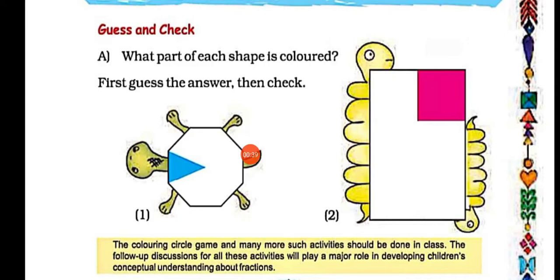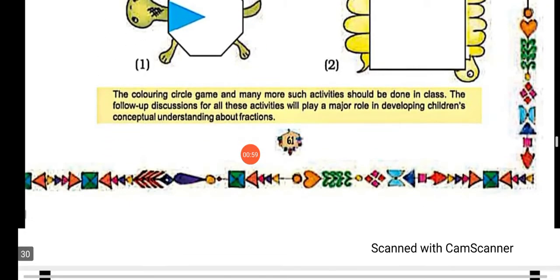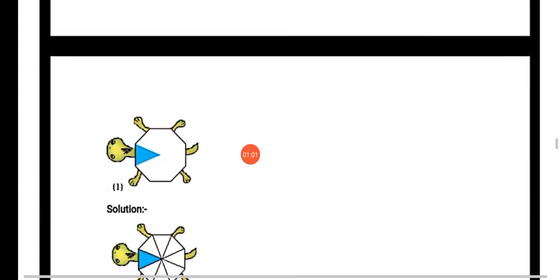Question 1 mein hame jo shapes diya hai, uska kuch part jo hai woh color kar diya gaya hai. What we have to do is, we have to first guess the answer — what part is colored — and then we have to check the answer. Hame pahle guess karna hai ki kitna part color kiya gaya hai, phir hume answer check karna hai.